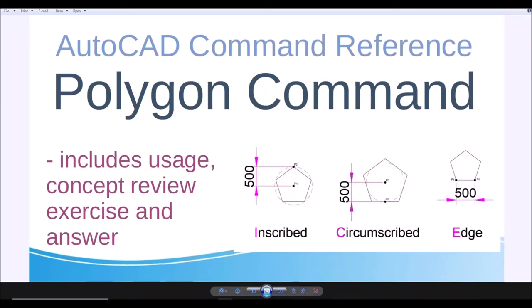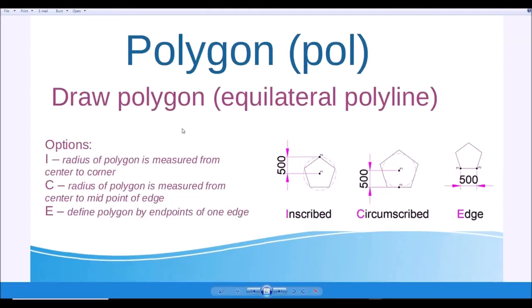Hey guys, I'm so happy to see you again. I'm going to show you how to use the polygon command. The polygon command allows you to draw a polygon, but the fact is it actually draws a polyline for you. The object is a polyline, not a polygon — inside AutoCAD there is no polygon object. I will show you that. Anyway, the shape is a polygon, so there are different options.